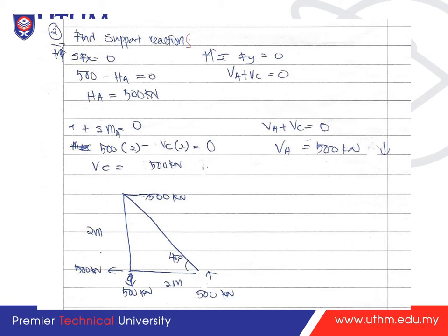Next, find the support reactions using equilibrium equations. For ΣFx = 0: the 500 kN force at point B acts in one direction, and HA acts opposite, so 500 − HA = 0, giving HA = 500 kN. For ΣFy = 0: VA + VC = 0, since those are the only two vertical forces. Then take moments about point A (ΣMA = 0).